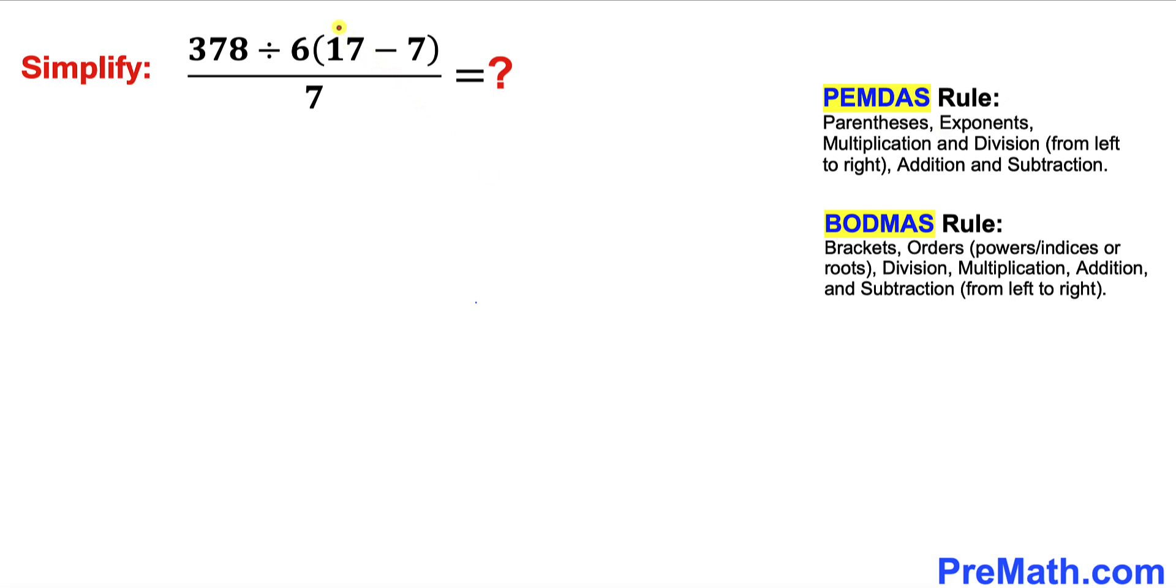So in our case, let's focus on this parentheses—that's going to come first. Inside parentheses we got 17 minus 7, and that is going to give us simply 10. Therefore, our rational expression could be written as 378 divided by 6, times 10, all over 7.